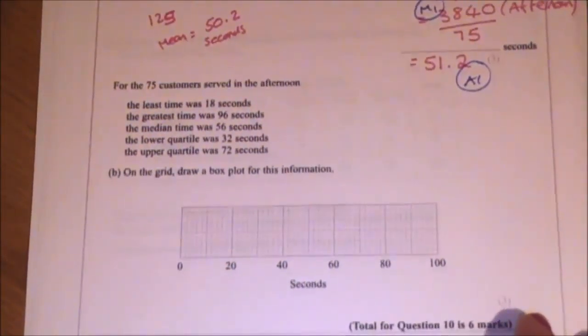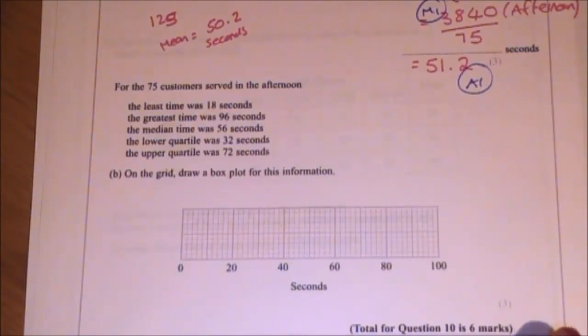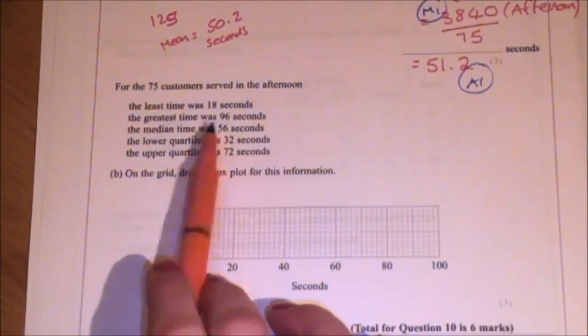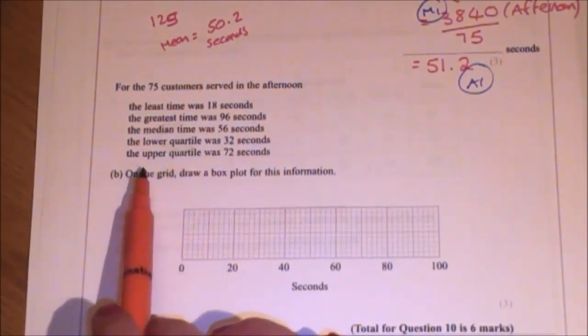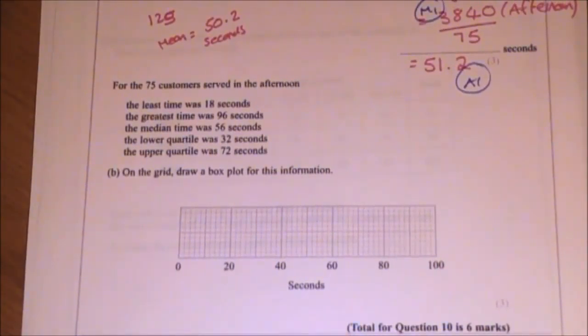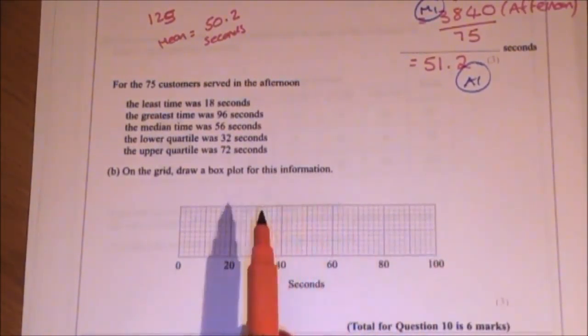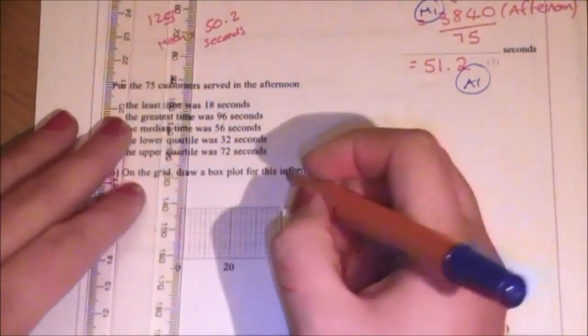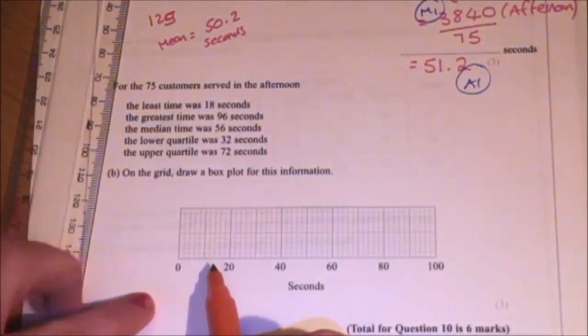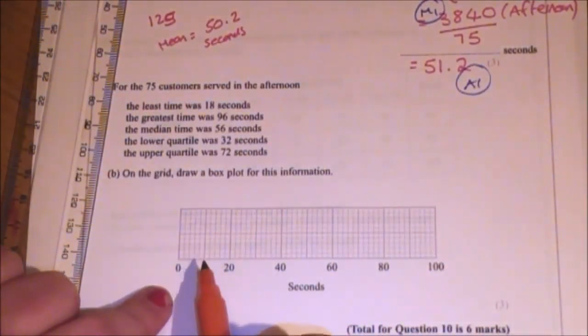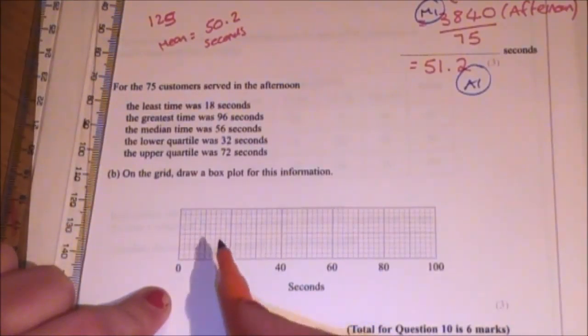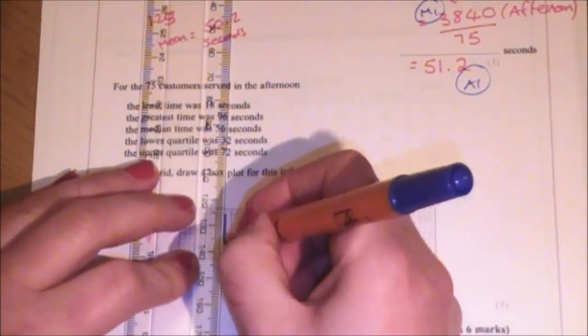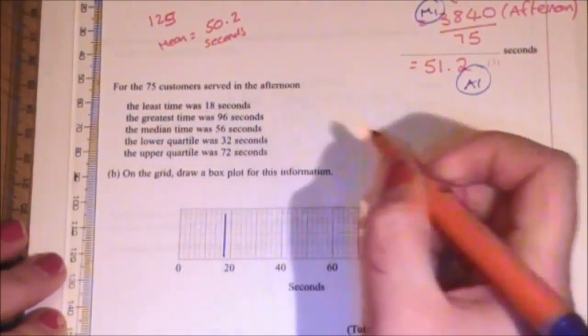Part B is a straightforward box plot question. For the 75 customers served in the afternoon, the least time was 18, greatest was 96, median 56, lower quartile 32, upper quartile 72. On the grid draw box plot for this information. You literally draw all the lines in and make sure you put the box in the right place. So 18 seconds. And they've been tricky with the scale. It goes from 0 to 20 in 10 increments. So that means each one little square is worth 2. So 18 is going to be there.